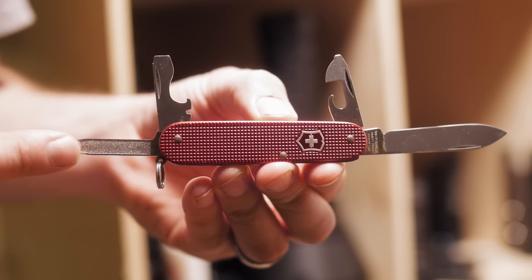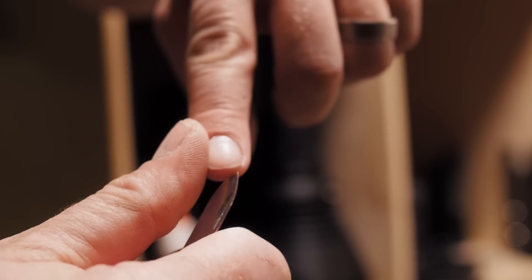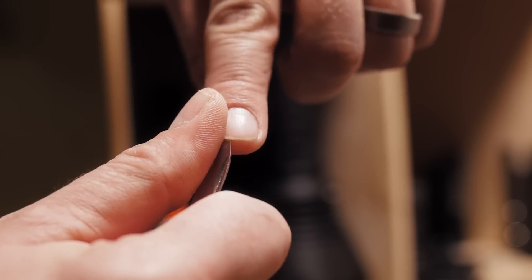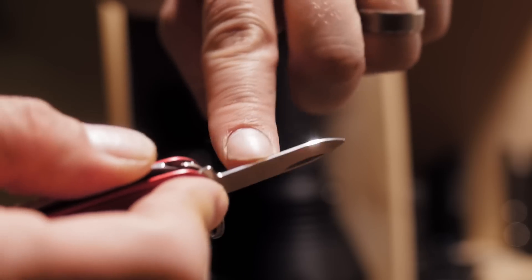Ok how about the second tool, the nail file. As a suit wearing bro, you might need to make sure your fingernails are dirt free and don't have snags. Use the tip for cleaning, and the file part for the personal manicure. The best place to do this is the lunchroom cafeteria at work.